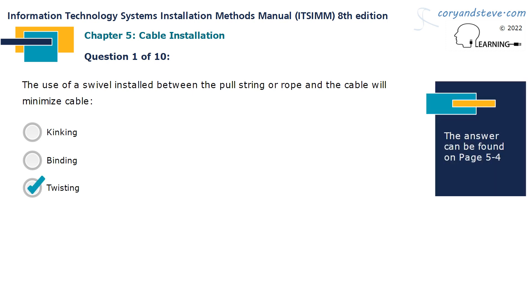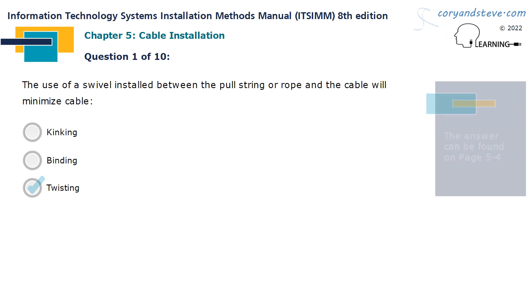The use of a swivel, installed between the pull string or rope and the cable, will minimize cable twisting.